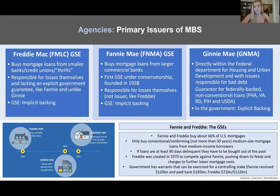Fannie and Freddie buy about 66% of all American mortgages. Ginnie Mae is a little different — it's part of the federal HUD, the Housing and Urban Development, and has issuers that are actually responsible for the bad debt themselves. The guarantor is federally backed, and they like to buy non-conventional loans — FHA, VA, RD, PIH, USDA — anything a bit different from a mid-sized conventional conforming loan. We see the Federal Housing Association serve low-income borrowers, the VA serve veterans, PIH serve American Indian tribal populations, and USDA serve agriculture.